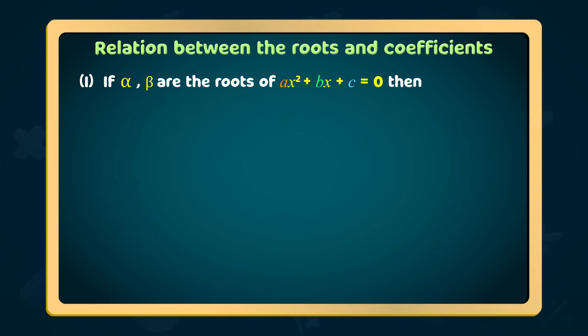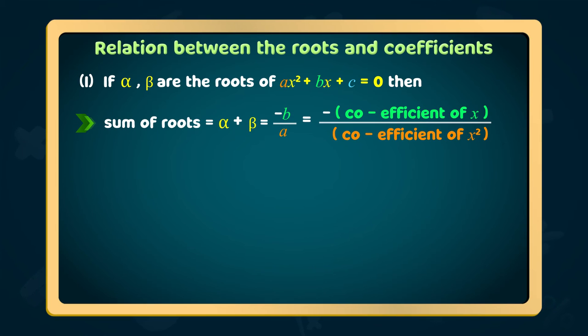Then the first point: sum of the roots equal to α + β = -B/A. This can also be remembered as equal to minus coefficient of x divided by coefficient of x².